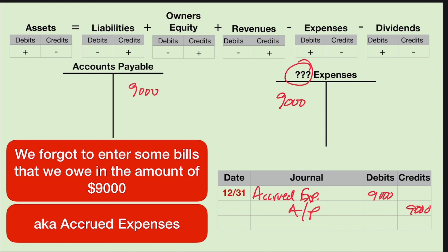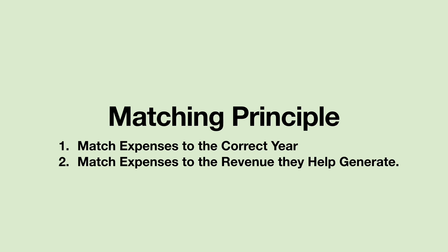That's the end of our 10 adjustments. If you learn these 10, most other adjustments you would ever need to make resemble them. In closing, I want to mention the matching principle — this is a key vocabulary term in this chapter and the whole reason we are doing all these adjustments. We want to make sure expenses are in the correct year and revenue is in the correct year. We cannot recognize revenue until after we earn it. Once we're satisfied with all the balances in all the accounts, then we are ready to publish financial statements.